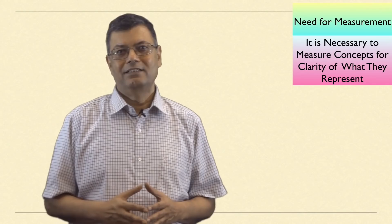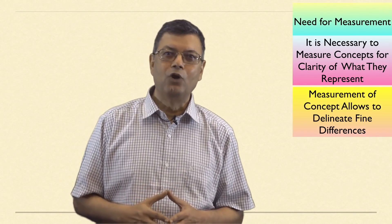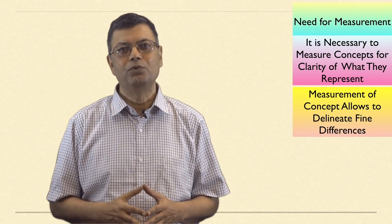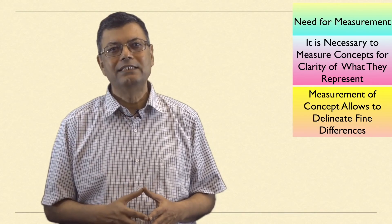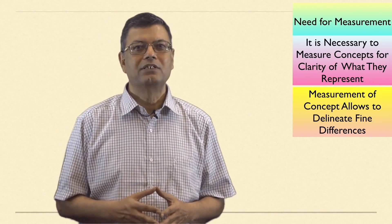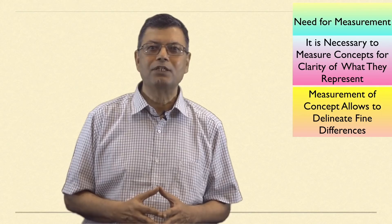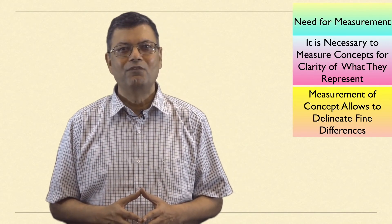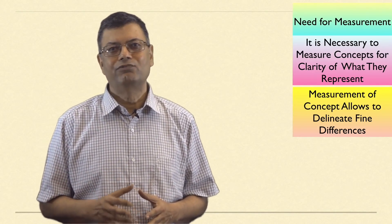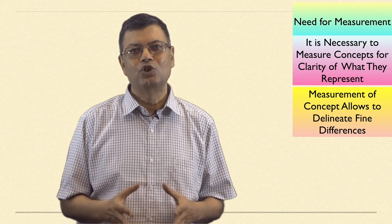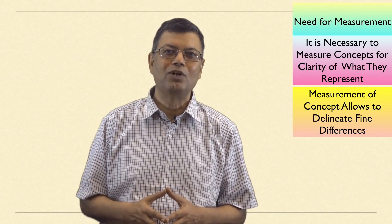Another aspect that justifies the use of measurement as a method of observation is that measurement allows us to delineate fine differences between people in terms of characteristics in question. This is very useful since although we can often distinguish between people in terms of extreme categories, fine distinctions are much more difficult to recognize. We can detect clear variations in levels of job satisfaction—people who love their jobs, people who hate their jobs—but small differences are much more difficult to detect.